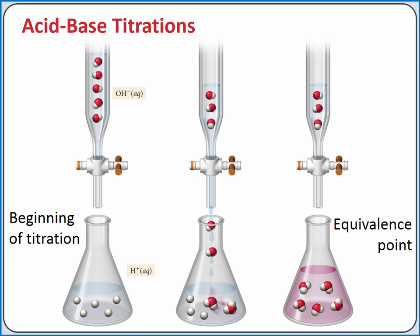In an acid-base titration, we can use a neutralization reaction to determine an unknown concentration of an acid or base. We have a solution of unknown concentration — in this case, the acid. When the base is added to the acid, it neutralizes the acid, which reduces the amount of H-plus in solution. We can slowly add base until we've completely reacted with the acid. The point at which we've added just enough base to completely react with the acid is called the equivalence point. We add an indicator to the acid solution to determine visually when we've reached this point. An indicator is a substance that is sensitive to the amount of H-plus in solution and can change the color of the solution when a particular concentration of H-plus is reached.